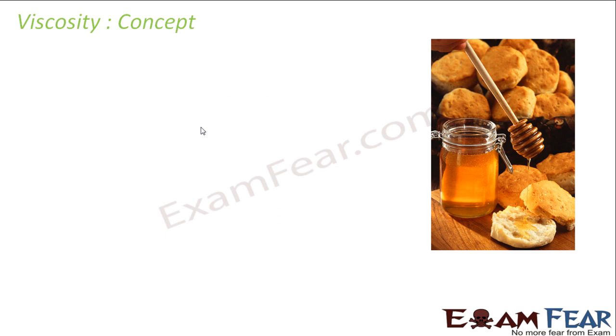Let's talk about viscosity. If you see honey, the way it drips is very thick — it drips very slowly. Same thing with chocolate. If you melt chocolate and take it out on a spoon, you can see the way it drips very slowly and very gently.